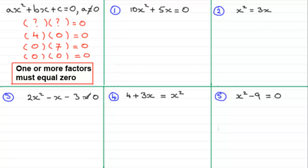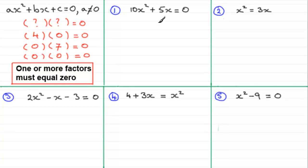I've got five examples here, and I definitely encourage you to look at each one because I've picked them for particular reasons to show all the different types of problems we can get with this type of work. In question one, we have a quadratic equation where a is 10, b is five, and c equals zero — that's okay. We've got our quadratic equation equaling zero, and now we need to factorize the left-hand side.